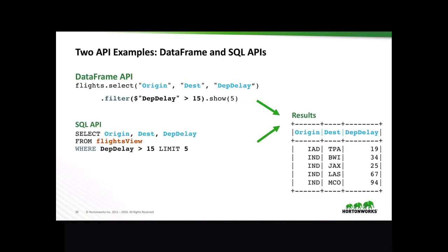Let's go over two different ways of accessing data in the Spark SQL module. First, with the DataFrame API, for my flights DataFrame I'm going to select three columns — origin, destination, and departure delay — filter where the departure delay is greater than 15 minutes, and show the top five results. With the SQL API, all I have to do is write a familiar SELECT origin, destination, and departure delay FROM flights view WHERE departure delay is greater than 15, limited to five. In both cases, I get the same result.